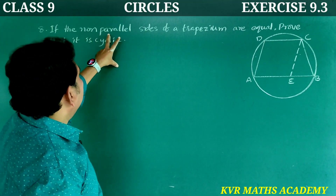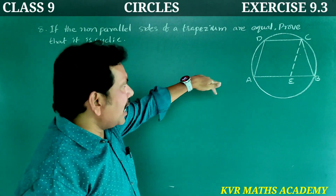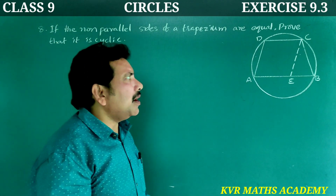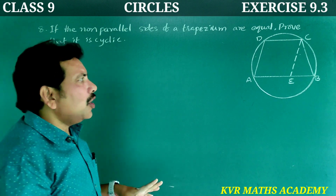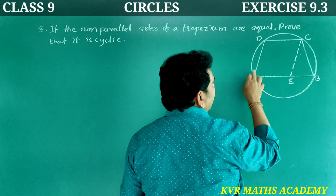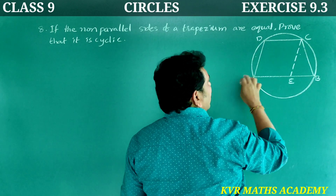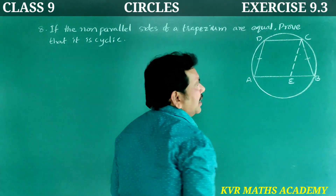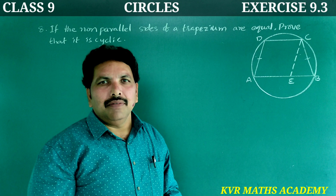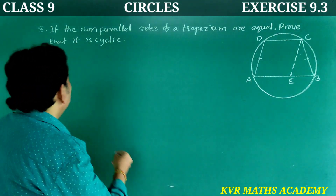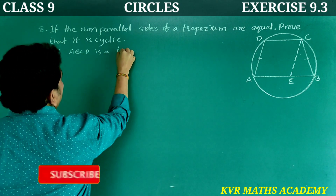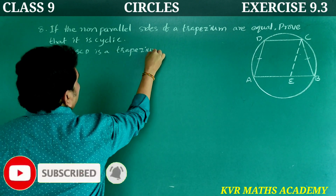Next question: If the non-parallel sides of a trapezium are equal, prove that it is cyclic. Trapezium ABCD where AB is parallel to CD, non-parallel sides AD = BC. We need to prove ABCD is a cyclic quadrilateral.